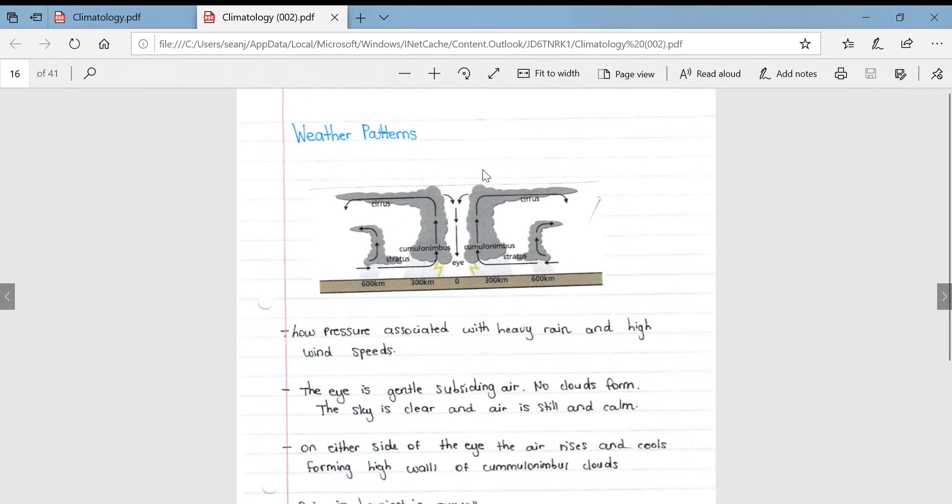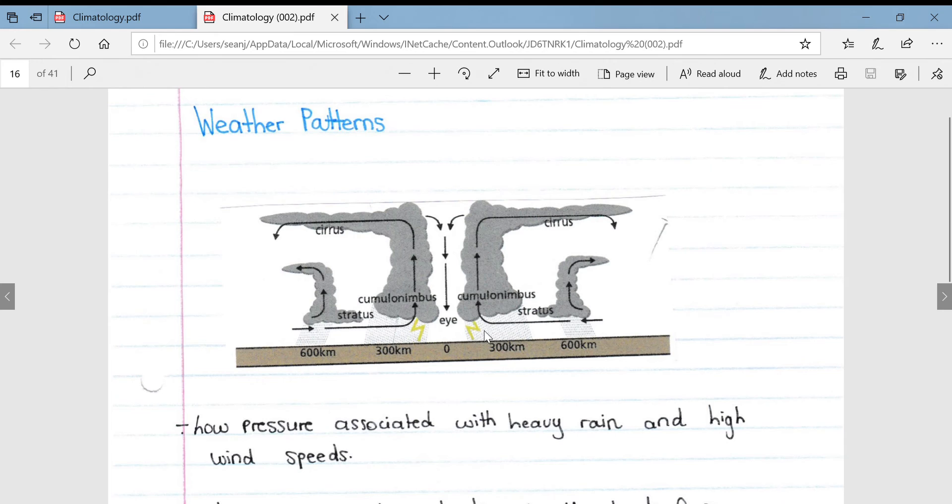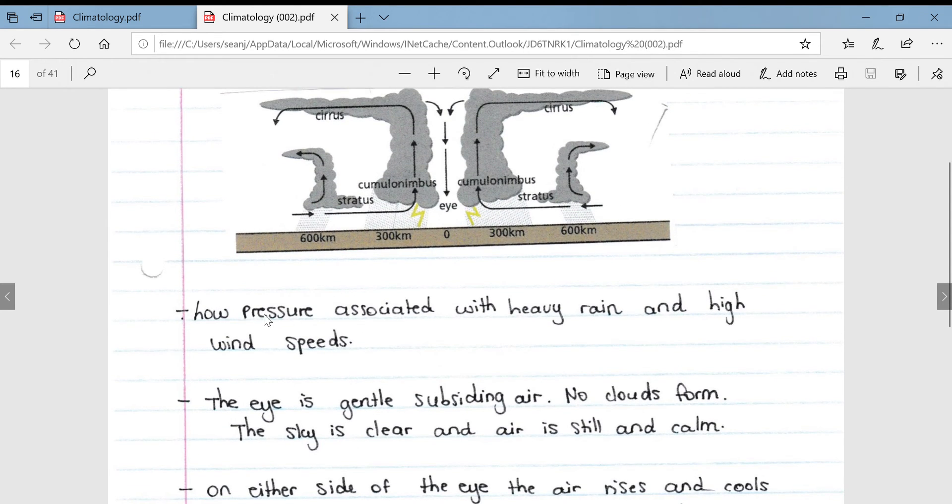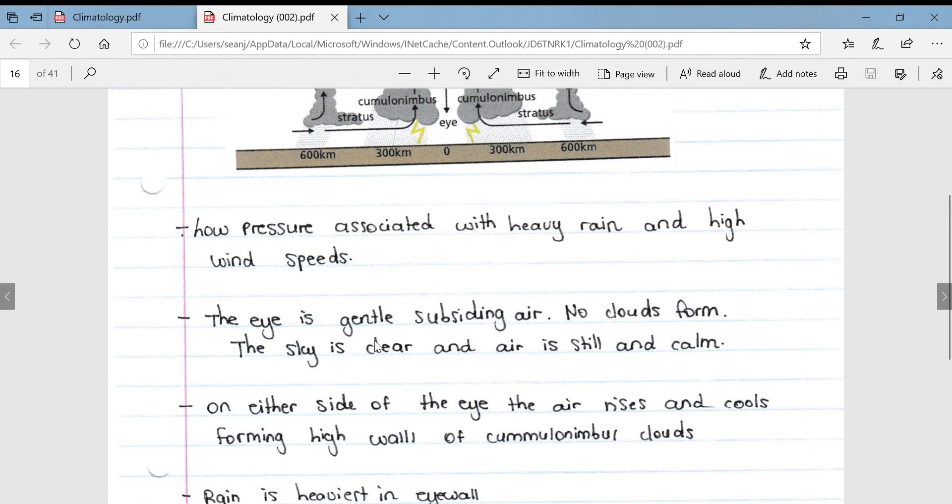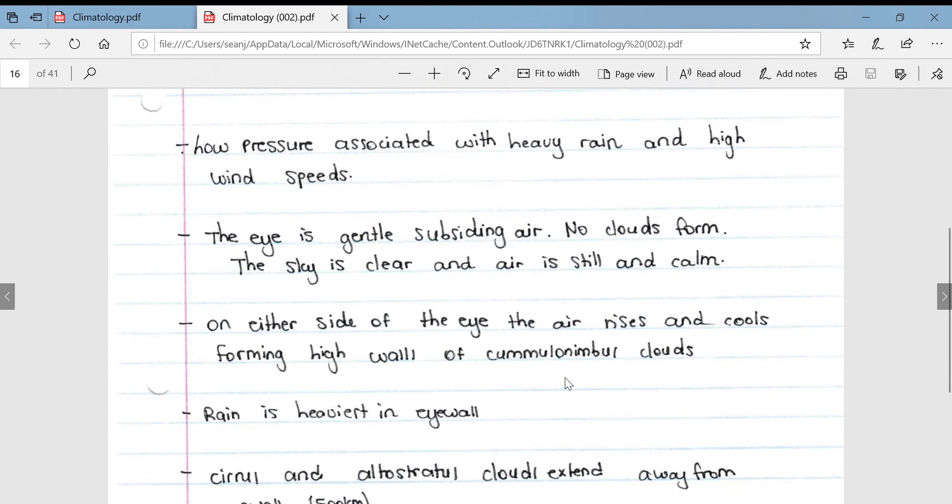If we look at some associated weather patterns, this is a perfect cross section through a tropical cyclone. We can see the clearly developed eye, the tight wall of cumulonimbus clouds around the eye extending to about 600 kilometers. Low pressure is associated with heavy rain and high wind speeds. The eye has gentle subsiding air, no clouds form in the eye. The sky is clear and the air is still and calm.